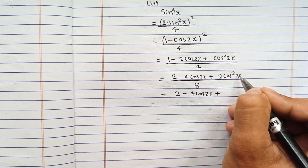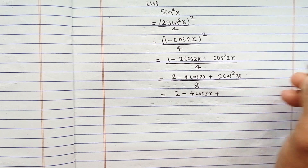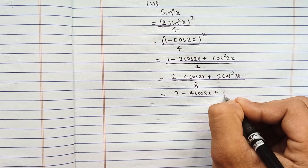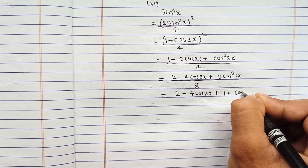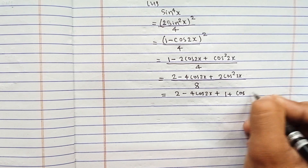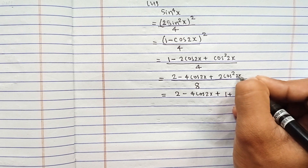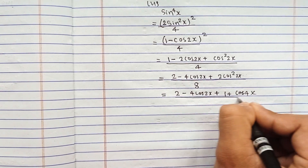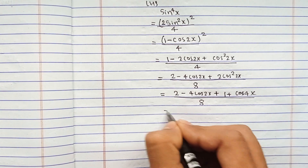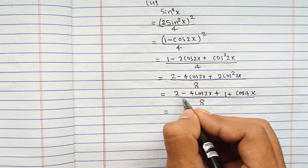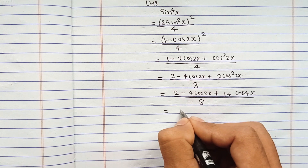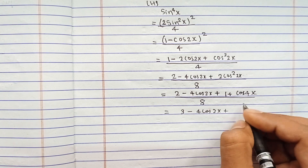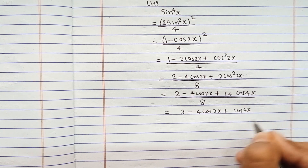Write it as 2 minus 4cos 2x plus 2cos squared 2x. Suppose 2x as theta; then 2cos squared theta means 1 plus cos 2theta. Since 2theta means 2 times 2x, that is 4x. So we get 2cos squared 2x equals 1 plus cos 4x, upon 8.